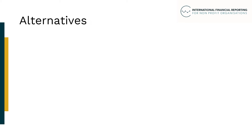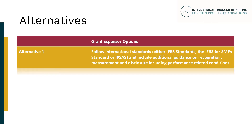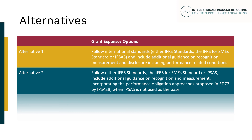Looking at the alternatives, two alternatives have been developed for grant expenses. Alternative one is based on following either IFRS standards, the IFRS for SMEs standard, or IPSAS with additional guidance to assist NPOs with NPO-specific issues, including recommended additional disclosures, with preference for the IFRS for SMEs standard. Alternative two builds on alternative one but requires that the principles proposed in IPSAS ED 72 transfer expenses are incorporated into the additional guidance, providing explicit guidance on grants with performance obligations and multi-year arrangements.